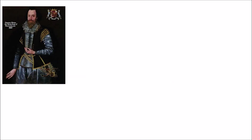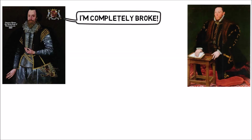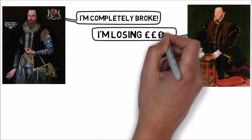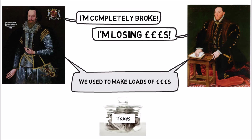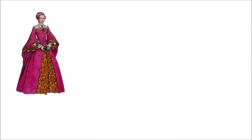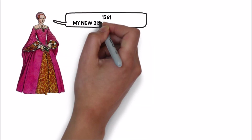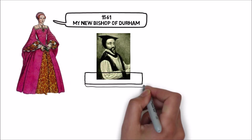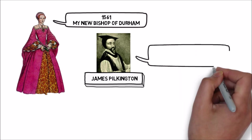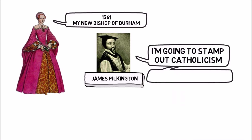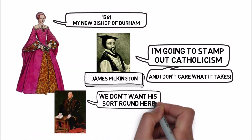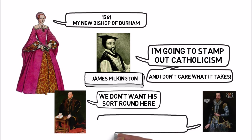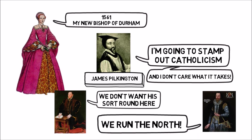With that comes a loss of wealth. Westmoreland by the time of the Revolt of the Northern Earls is bankrupt and has to take out loans to support himself. Northumberland is not quite so bad but has lost a lot of income due to the loss of his positions, because these positions come with the right to tax people. Adding insult to injury, in 1561 Elizabeth names James Pilkington the Bishop of Durham — his job is to stamp out Catholicism using pretty harsh methods, and the Northern Earls really resent his interference in the north.